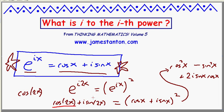oh, cosine of 2x, the real part of the left-hand side, must match the real part of the right-hand side. Cosine of 2x must be cos squared minus sine squared.